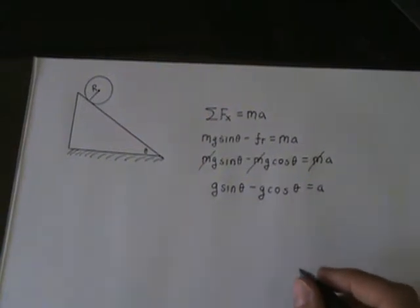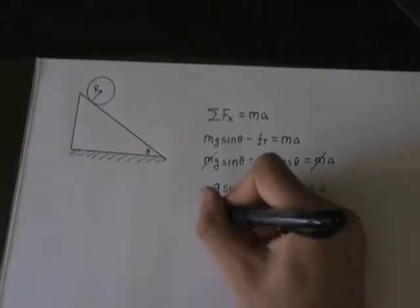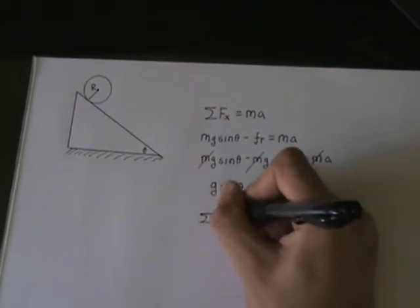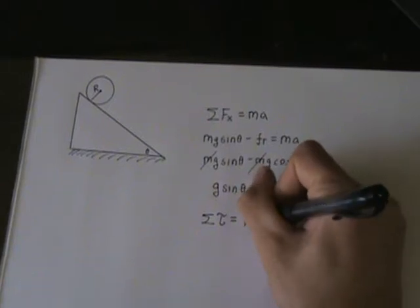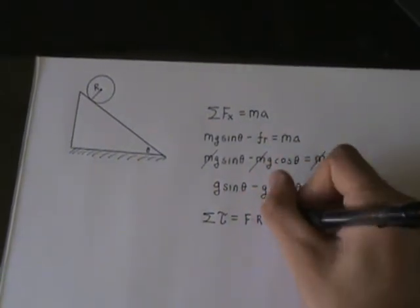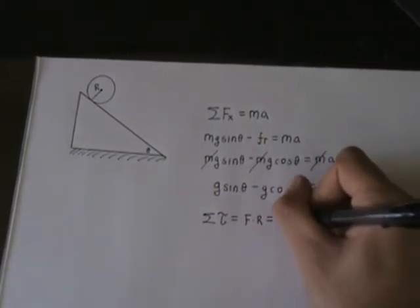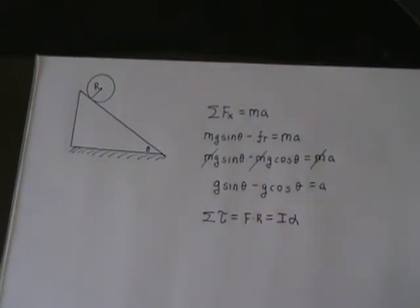Let's write down all we know from rotational dynamics. We know that the net torque on an object is equal to force times the radius, but it's also equal to moment of inertia times its angular acceleration.